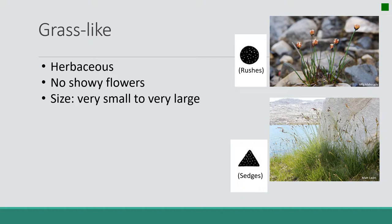Our grasslikes — these are our sedges and our rushes. Again they have no showy flowers and they can be small to large. What helps differentiate sedges and rushes from grasses is that they have stems without joints — no nodes and no internodes. Their stems are also solid. They are triangular or round: sedges will have a triangular shaped stem and rushes will have a round stem. If you hold them between your fingers and roll them, it'll help tell you the difference. If you cut them open to see if they're hollow or solid, it will help tell you whether they're a grass or grasslike.